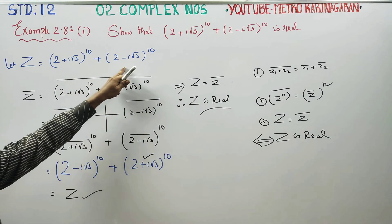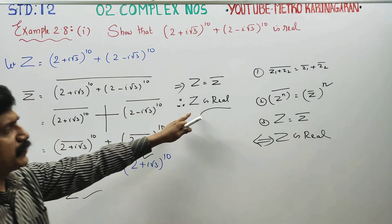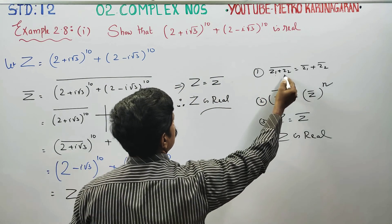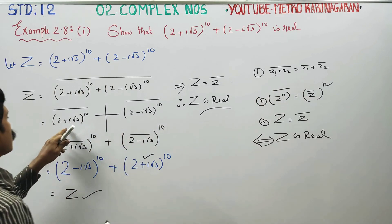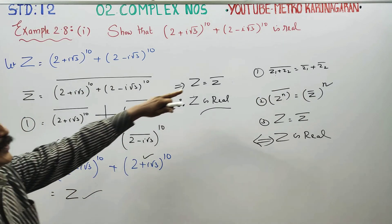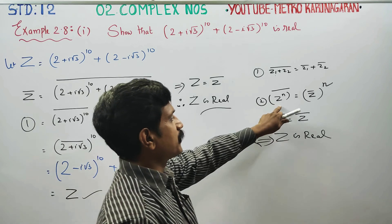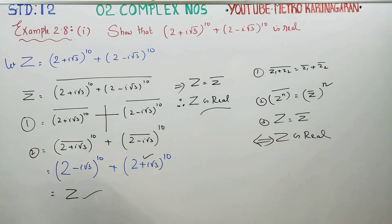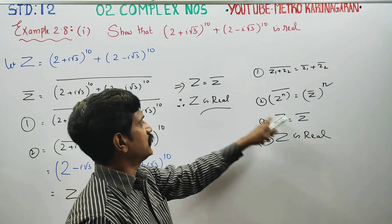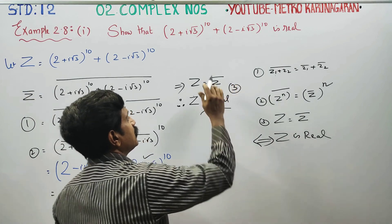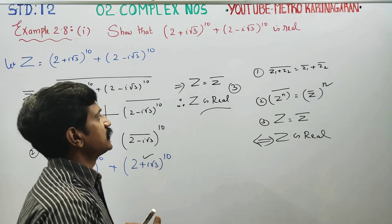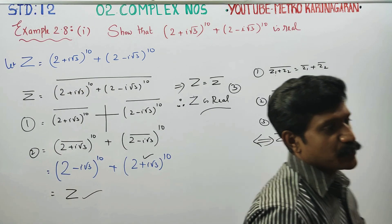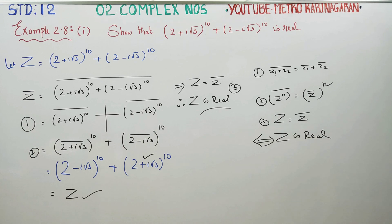If you have the original sum, we can use it directly. The sum is a real sum. Using the property, you can use property number 1 and property number 2 to confirm the result. So using this property, you can use this as a final result. Thank you.